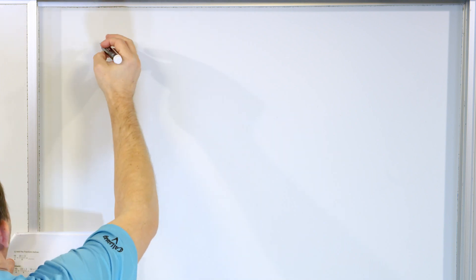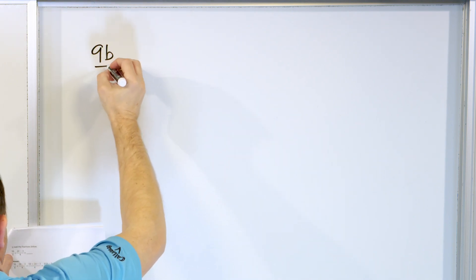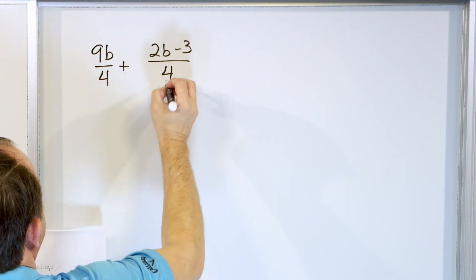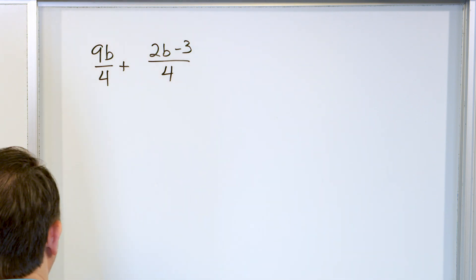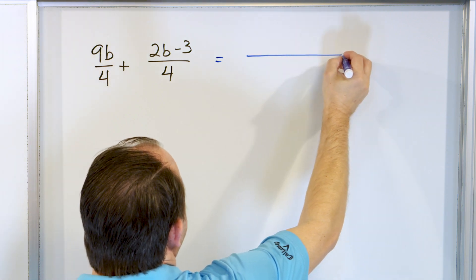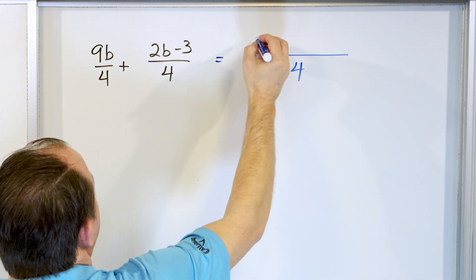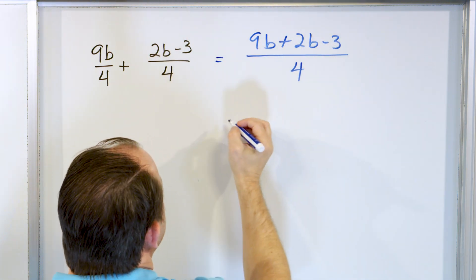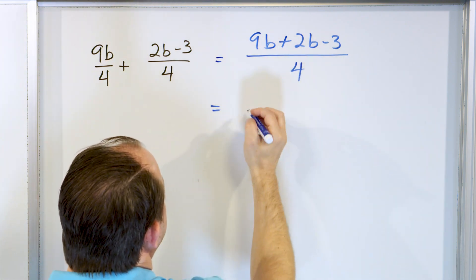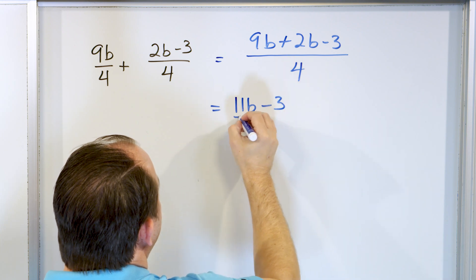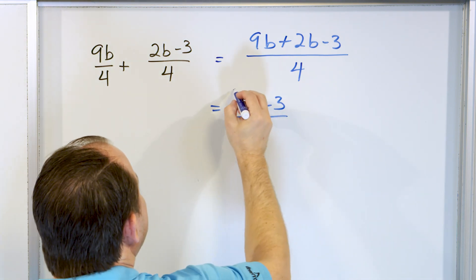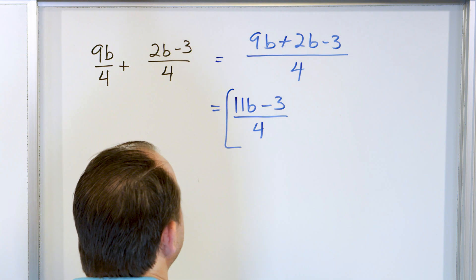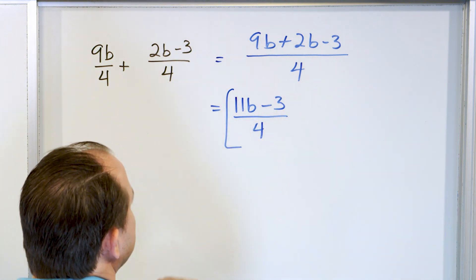Let's look at nine B over four plus two B minus three over four. The common denominator is four. I add the numerators: nine B plus two B minus three. The B terms are like terms — nine plus two is eleven — giving eleven B minus three over four. If you wanted to, you could break it apart into eleven B over four minus three over four, but none of that cancels, so I'll just leave it as eleven B minus three over four.